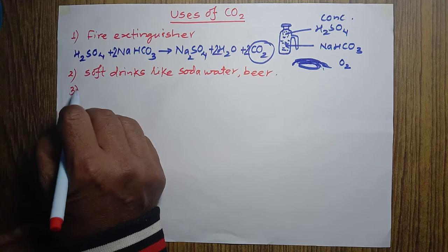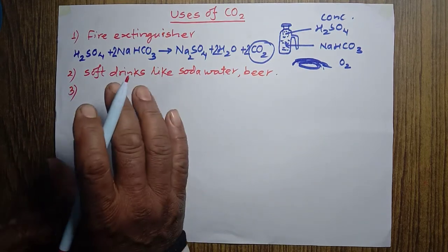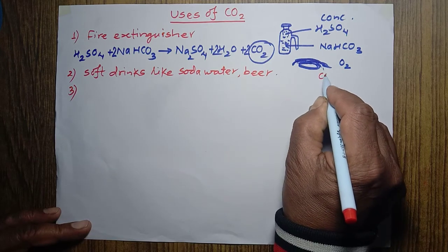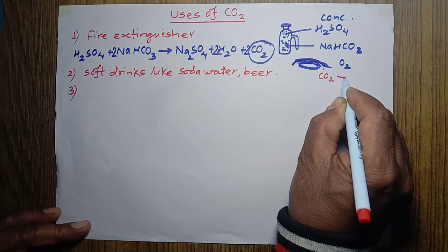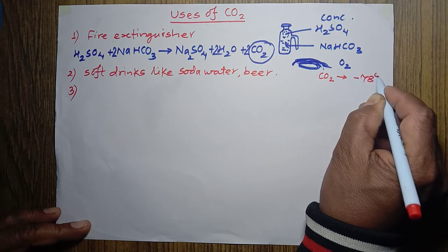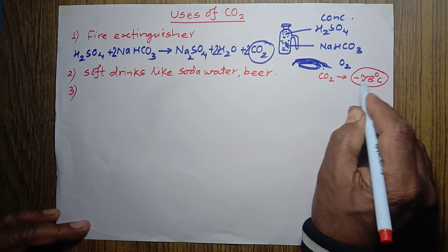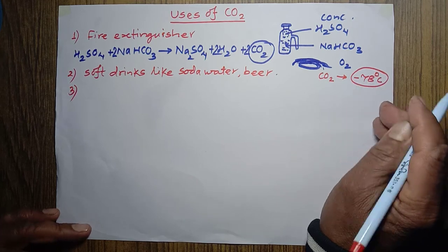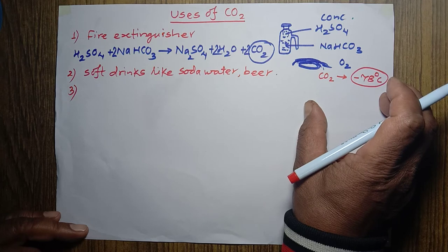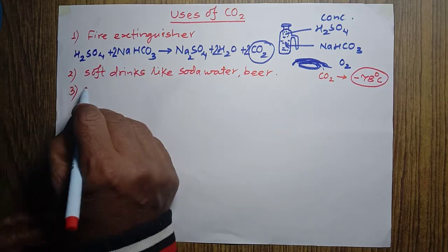Another important use involves solid carbon dioxide. When carbon dioxide is cooled down to minus 78 degrees Celsius, it converts into a white ice-like solid substance called dry ice, also known as solid carbon dioxide.